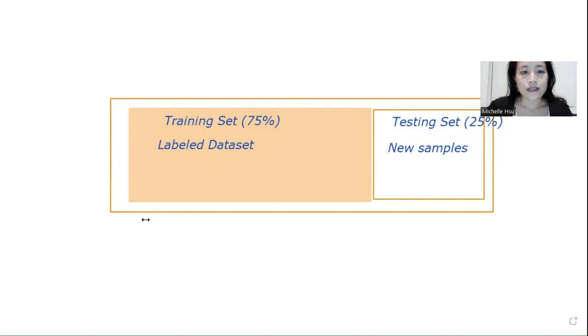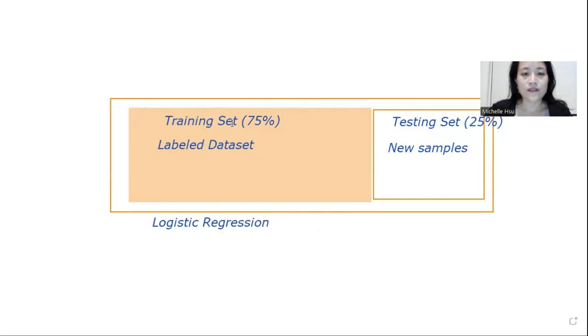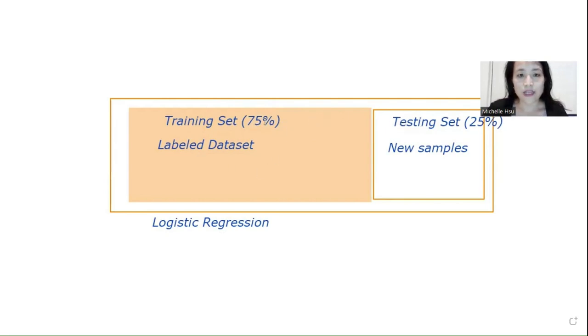We use the rule to classify the new samples in this testing set, and it's also very important to evaluate the accuracy of the rule. So if you're interested in testing logistic regression, you split the dataset into 75% training and 25% testing. Using the training set, you build a classification rule. Once that classification rule is established, you test it using the testing set and summarize how the model performs.